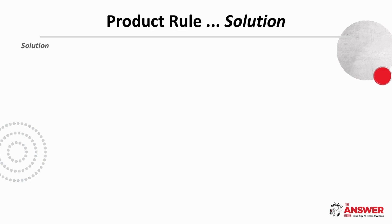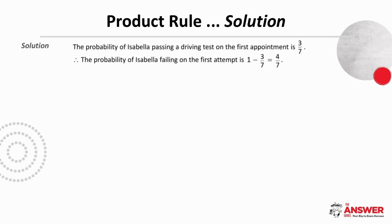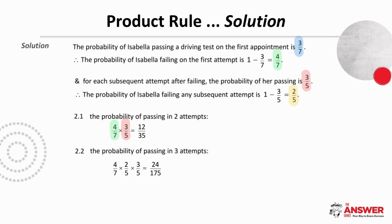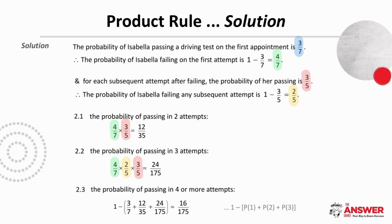Let's first establish all the relevant probabilities. If the probability of passing on the first appointment is 3/7, then the probability of failing on the first attempt is 4/7, as these are complementary events. For each subsequent attempt, the probability of passing is 3/5 and the probability of failing is 2/5. For 2.1, the probability of passing in two attempts is 4/7 × 3/5. For 2.2, the probability of passing in three attempts is 4/7 × 2/5 × 3/5. For 2.3, the probability of passing in four or more attempts is the same as not passing in the first three attempts, calculated as 1 minus the sum of the probabilities of passing on the first, second, and third attempts.